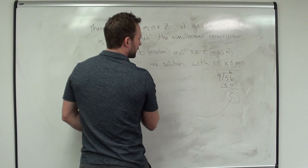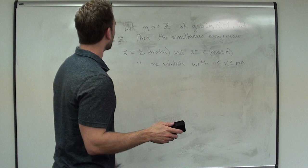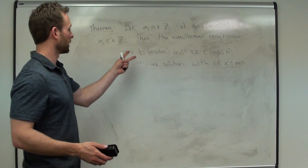Keep this in mind because we have a proof coming up that is rather long. This right here — x congruent to b mod m, x congruent to c mod n — if these two guys are co-prime, then we do have a solution to that. And that's important.